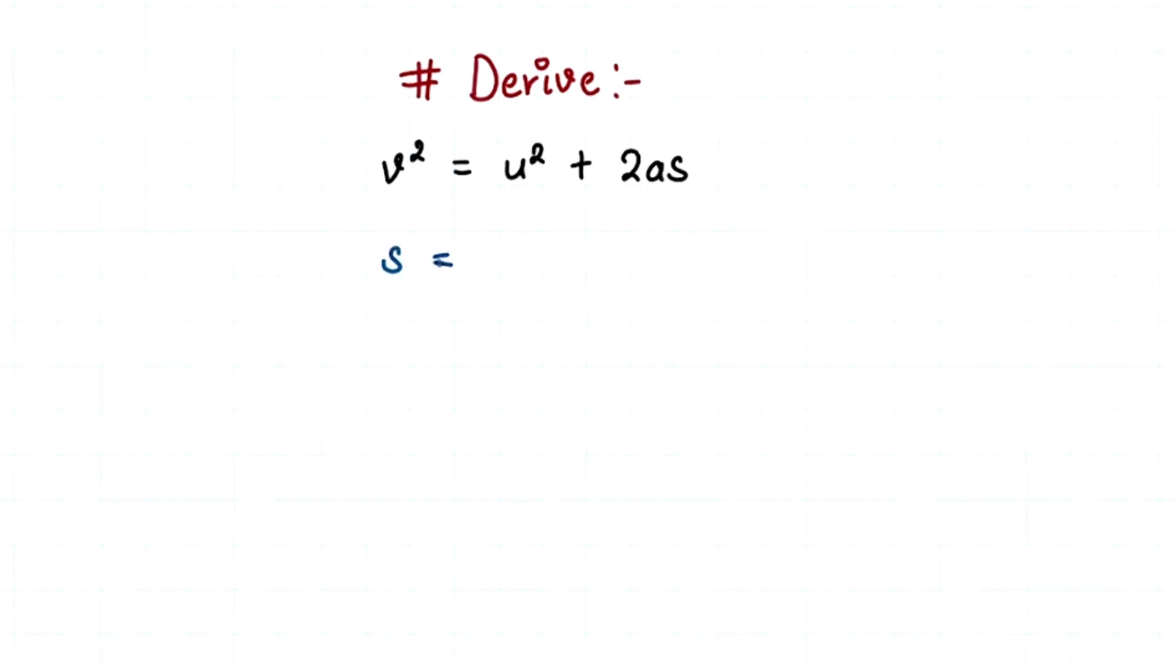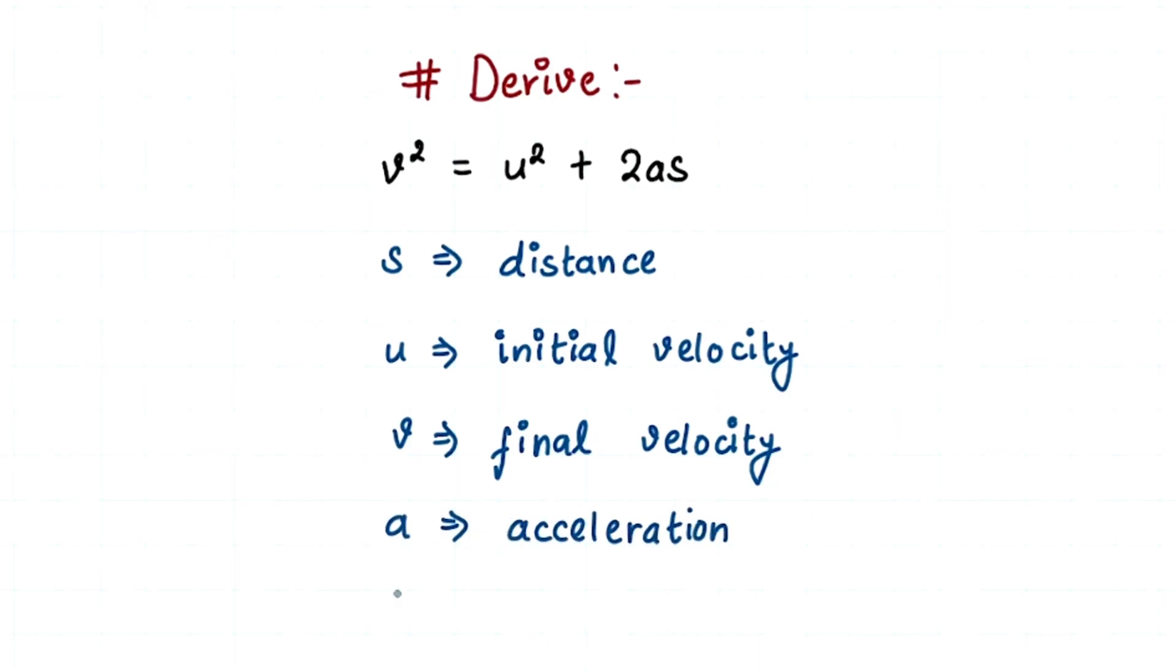So here, s is our distance, u is our initial velocity, v is our final velocity, a is our acceleration, and t is our time.